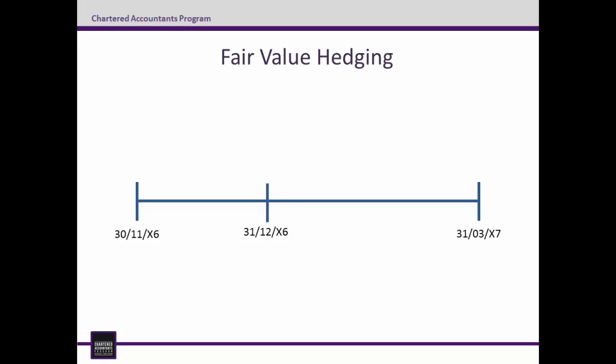Step 3 relates to the accounting required on 30 November 2006 for a fair value hedge. This is the date the firm commitment and the forward were entered into. There is no entry for the firm commitment as there has been no transaction — it is an unrecognised firm commitment. For the FX forward, the fair value is zero as the value of the €5 million to be received is equal at this time to the value of the Aussie payment of $7,812,500. As such, no entry is required either.